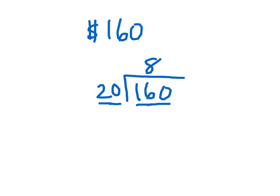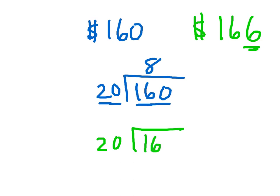What if you had $166? How many uniforms could you get? Well, this ends in a six. It's not a zero, so you know it's not going to go evenly. So $20 goes into $166. It's going to go in those eight times. That's going to get you $160 with a remainder of $6 left over.